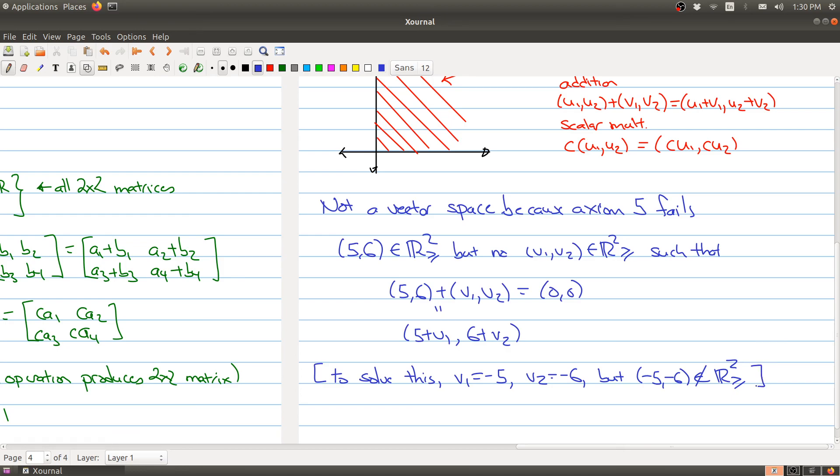So this set cannot be a vector space because it fails one of the axioms. So if you ever have a set where at least one of the axioms fails, then it fails to be a vector space. So hopefully this example here illuminates what a vector space is a little bit as well.